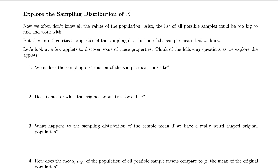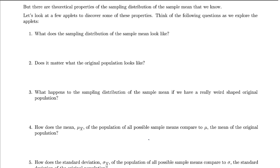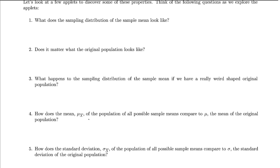Usually we don't know all the values of the population, so we can't list all possible samples. But there are theoretical properties we do know, and we'll look at an applet to discover them. Think about: What does the sampling distribution of the sample mean look like? Does it matter what the original population looks like? What happens with a really weird original population?